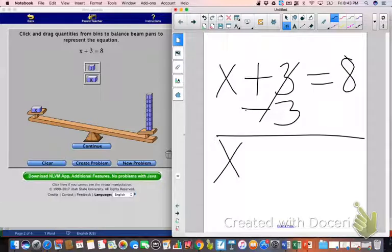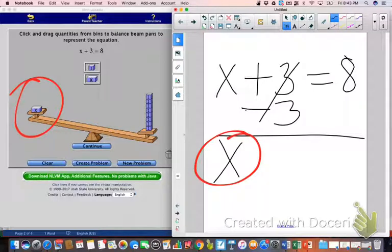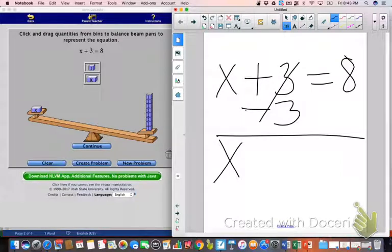And that makes sense. Over here on my problem, I've got just an x left by itself. I also have an x just left by itself over here on my model. But in case you haven't noticed already, I'm sure you have, there's an issue with our balance beam.